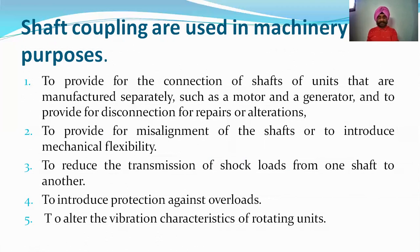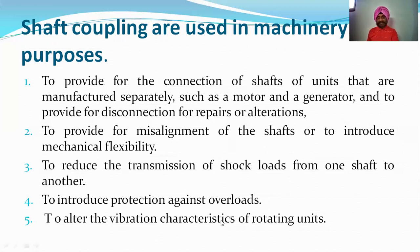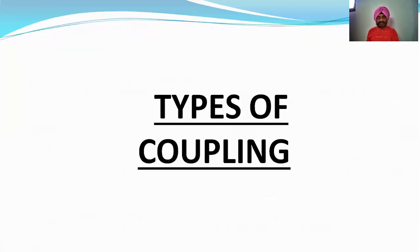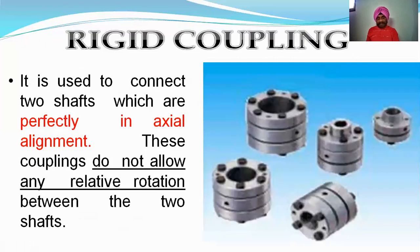The fourth purpose is to introduce protection against overload, so that the coupling acts as a protection mechanism. The fifth purpose is to alter the vibration characteristics of rotating units — for example, using rubber-type materials that provide damping of vibrations.